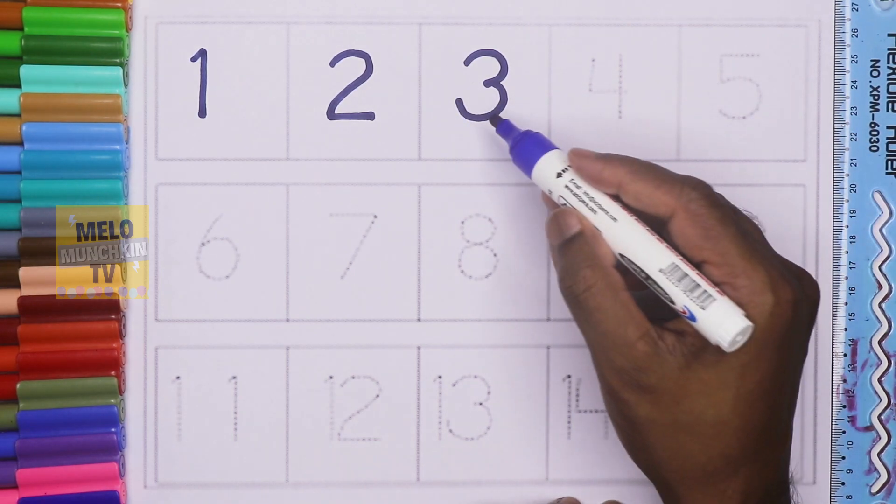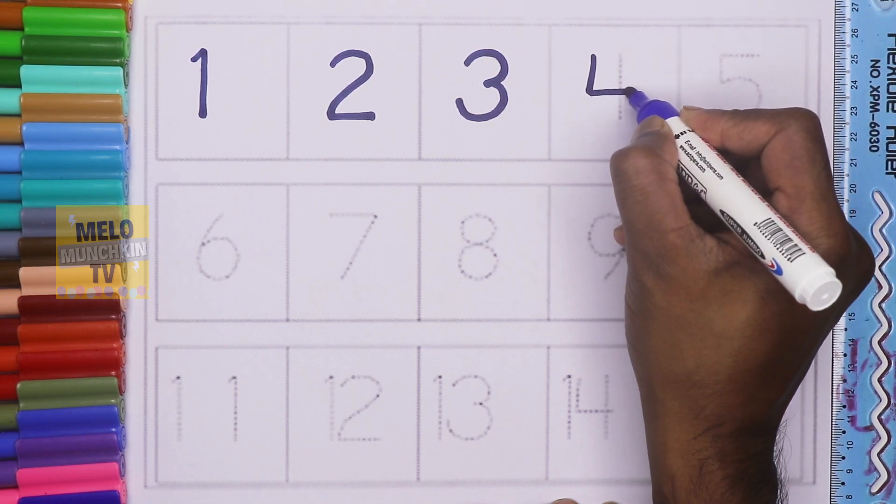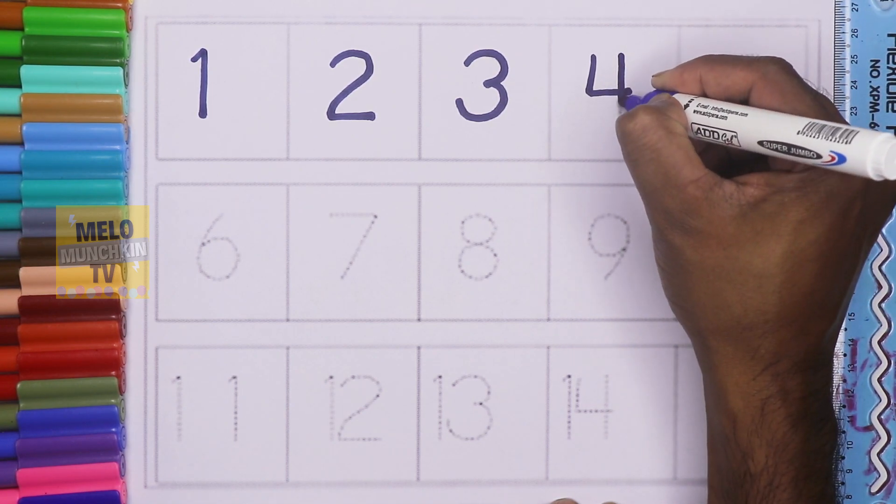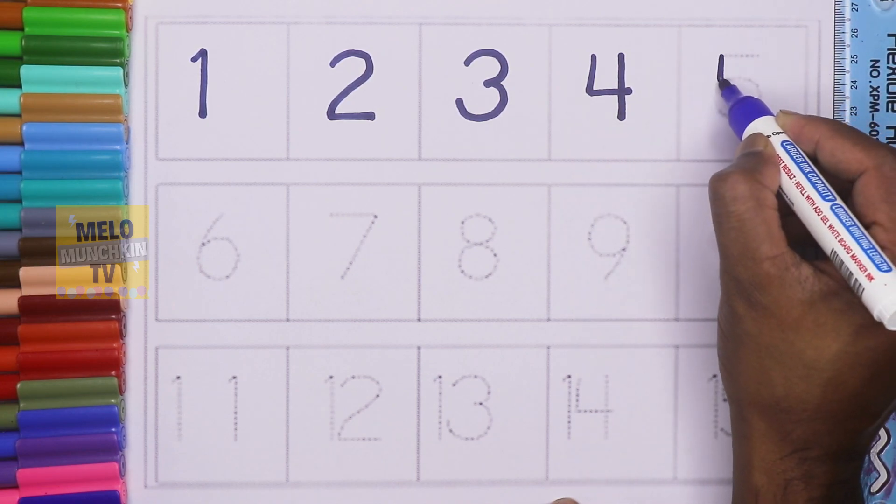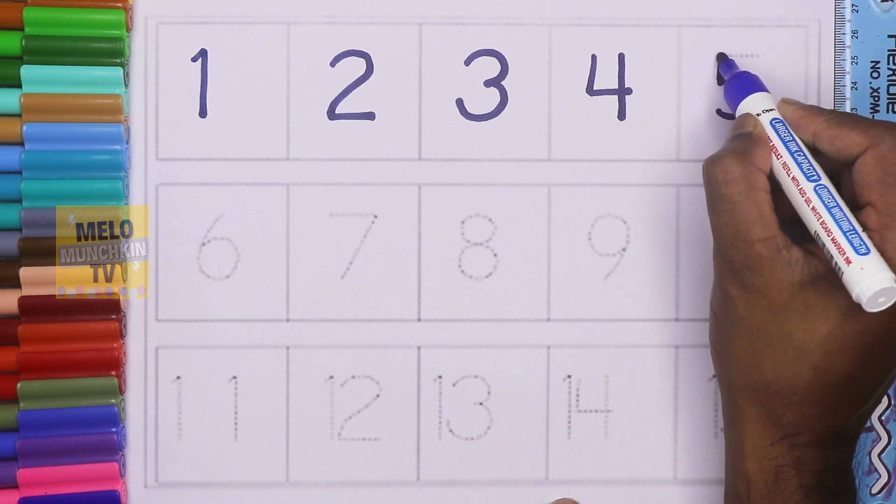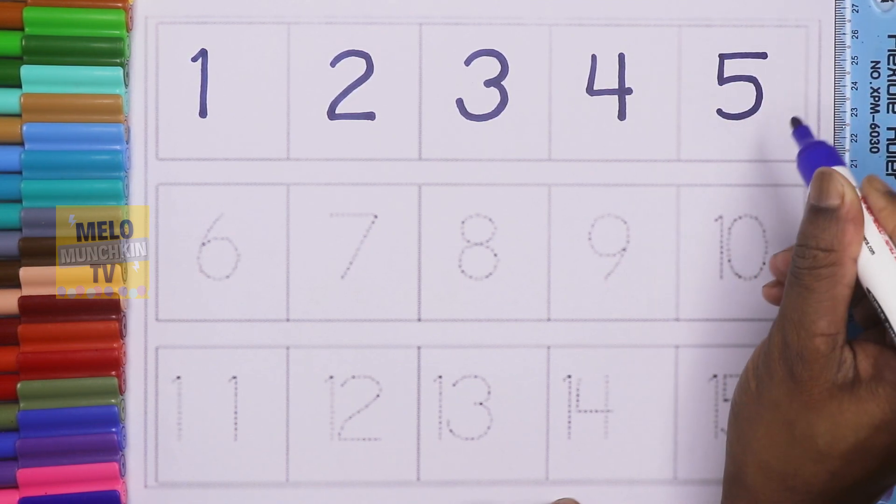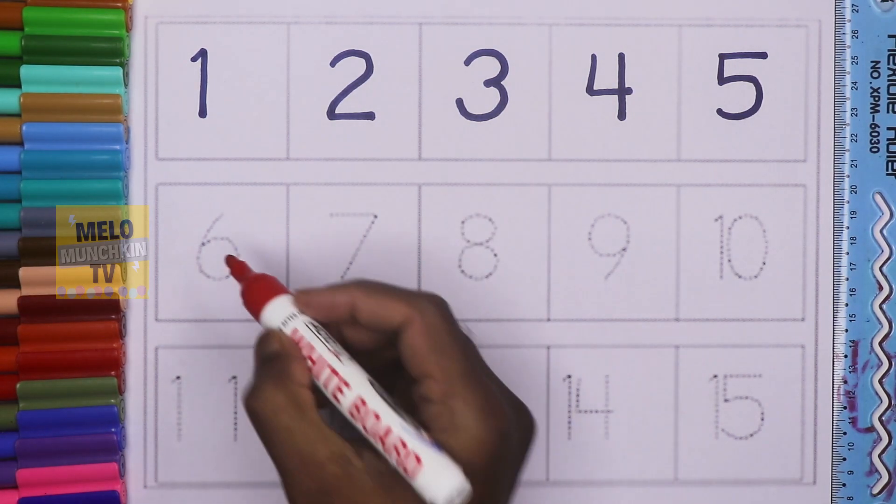This is number 4, F-O-U-R, 4, F-O-U-R, 4. This is number 5, F-I-V-E, 5, F-I-V-E, 5. Next line, red color.